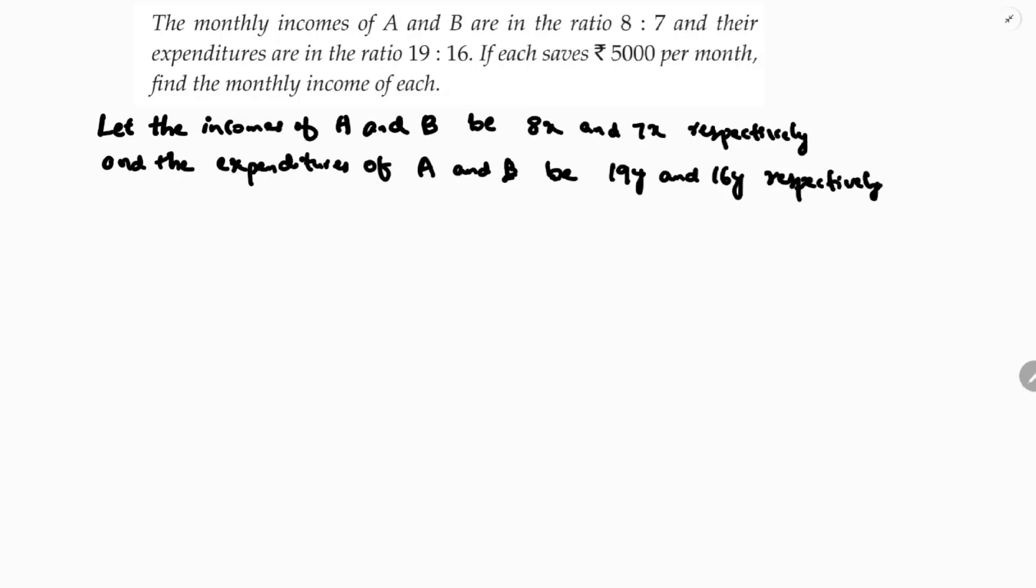Now if each saves, see suppose a person's income is 100 rupees for example and expenditure is 70, so he will save 30 rupees. So the equation is simple: from income we need to take out the expenditure, the amount which he spent, you will be getting savings.